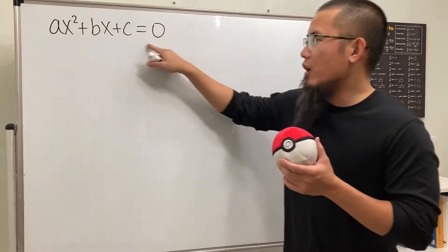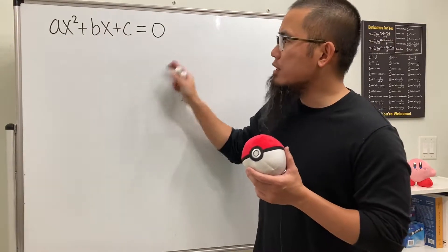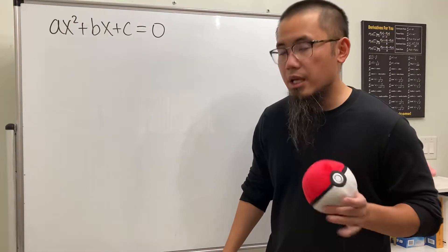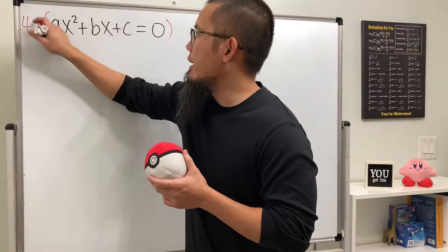We start with the standard form of a quadratic equation. And the standard way to complete the square is that we divide everybody by a first so that we can get x squared right here. Now we are not going to do that here. Instead, we are going to multiply everybody by 4a. Why?